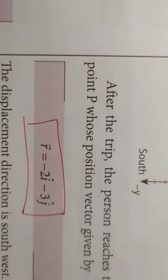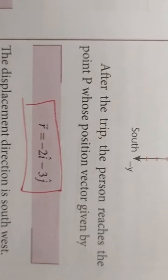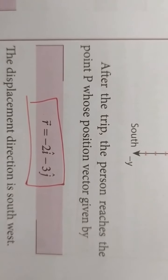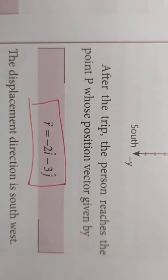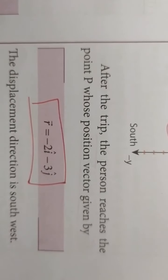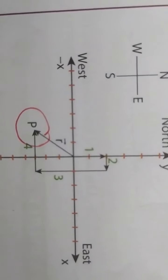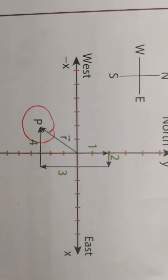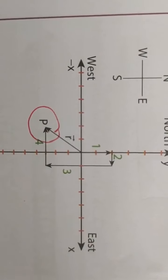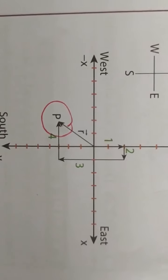The final position vector is given by minus 2 i-cap minus 3 j-cap. Both axes are in the negative direction, so minus sign for both x-axis and y-axis. It meets at 2 divisions on the x-axis and 3 divisions on the y-axis, giving minus 2 i-cap minus 3 j-cap.